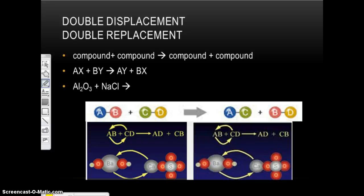Now we have a double displacement or double replacement. This is like what we did in the unit for a lab. Now we have a compound plus a compound yields a compound plus a compound. Obviously, these are different compounds than those, because if they're the same compounds as these, nothing happened, there was no reaction.